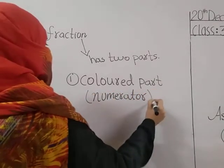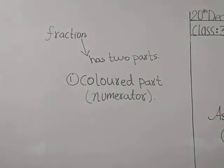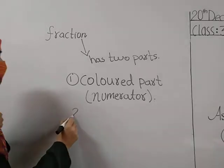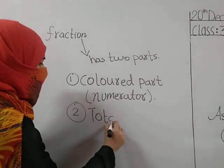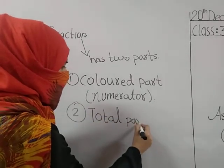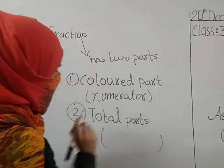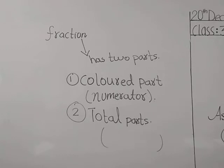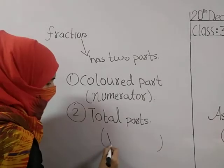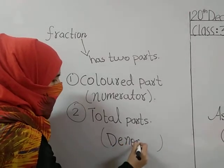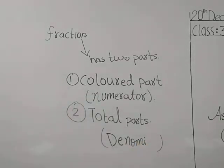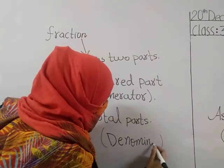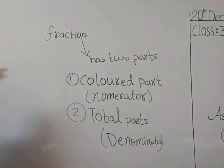So what is the second part? Fiza, you tell me. The second part is the whole part, total part, or complete part — total parts. And we also say it is the denominator: D-E-N-O-M-I-N-A-T-O-R. So colored part is numerator and total parts are known as denominator.